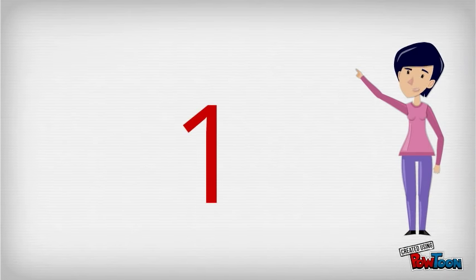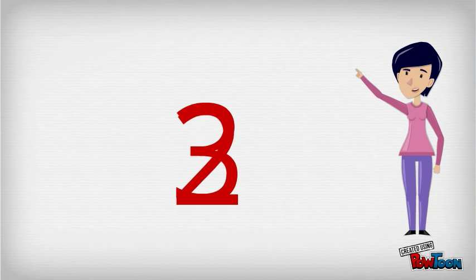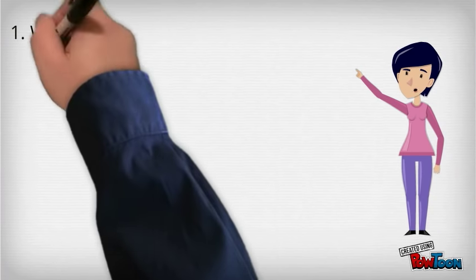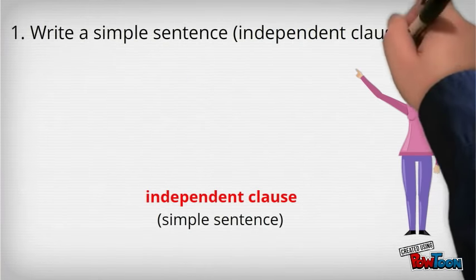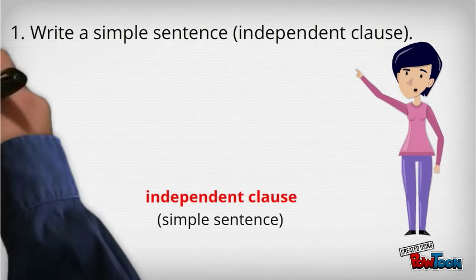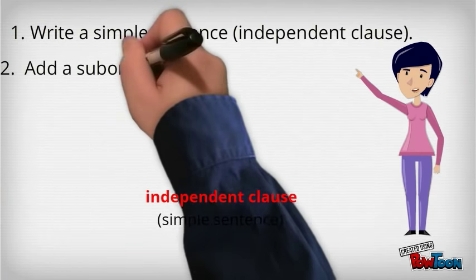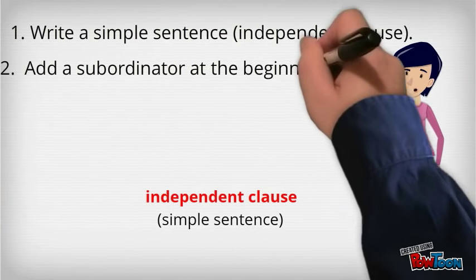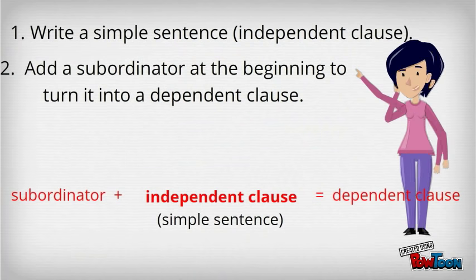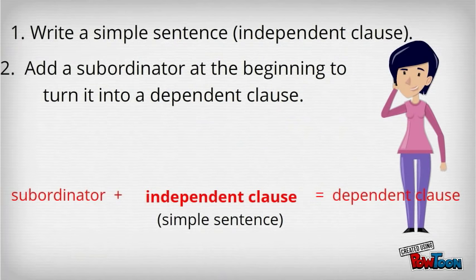Try to write three of your own examples on the bottom of your notes. Start by writing an example of an independent clause or simple sentence. Then turn it into a dependent clause by putting a subordinator at the beginning. I look forward to seeing your examples tomorrow.